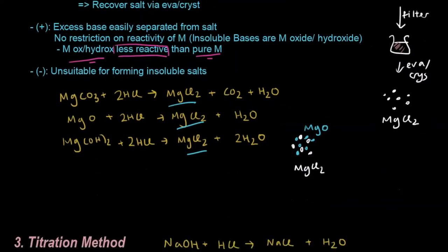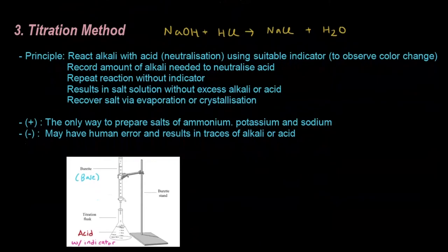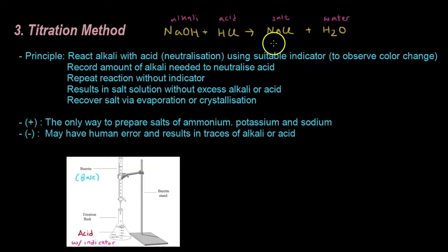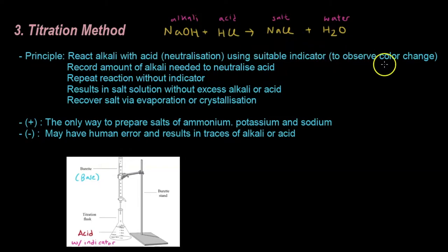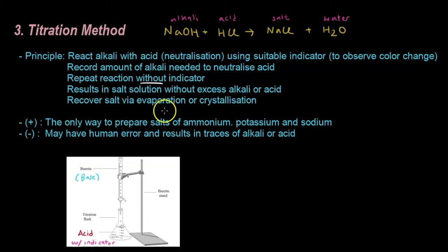Finally, let's move on to the titration method. This uses a neutralization reaction: alkali plus acid gives salt and water. The principle is to react alkali with acid via neutralization using a suitable indicator to observe a color change. You record the amount of alkali needed to neutralize the acid, then repeat the reaction without the indicator. This results in a salt solution without excess alkali or acid, which you then recover via evaporation and crystallization.